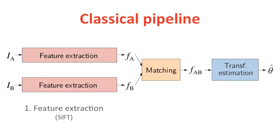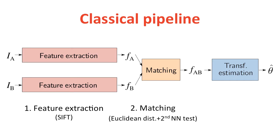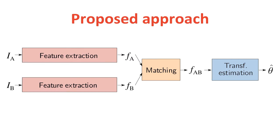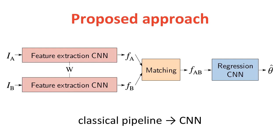We base our approach on the classical image correspondence pipeline, which consists of three main steps: Feature Extraction, Matching, and Transformation Estimation. In this work we use the same three steps, but each block is implemented using differential operations, such that the whole pipeline is trainable end-to-end.